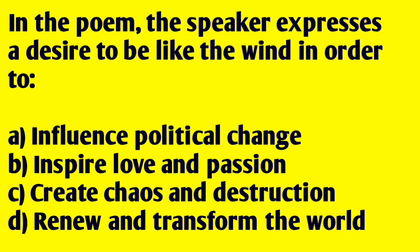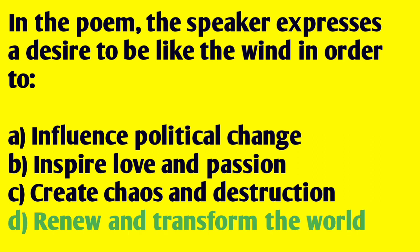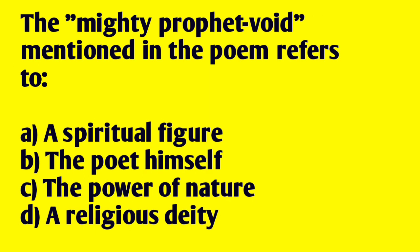Next, in the poem, the speaker expresses a desire to be like the wind in order to: A. Influence political change, B. Inspire love and passion, C. Create chaos and destruction, D. Renew and transform the world. Next, the mighty prophet void mentioned in the poem refers to: A. A spiritual figure, B. The poet himself, C. The power of nature, D. A religious deity. The answer is the poet himself.